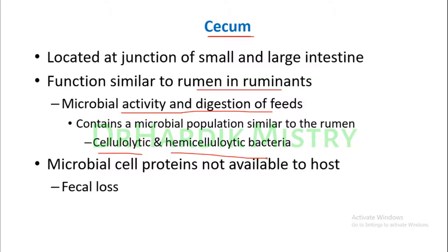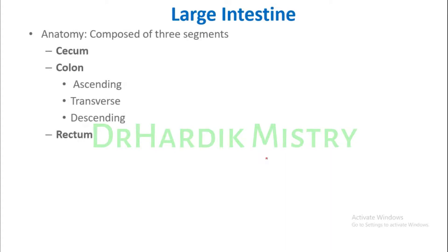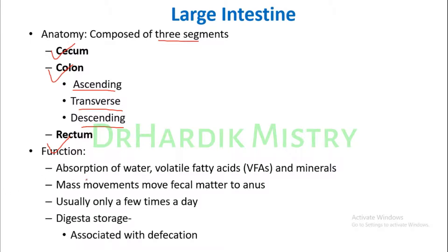Now the anatomy of the large intestine: it is composed of three segments — the cecum, colon, and rectum. The colon itself has three parts: ascending colon, transverse colon, and descending colon.